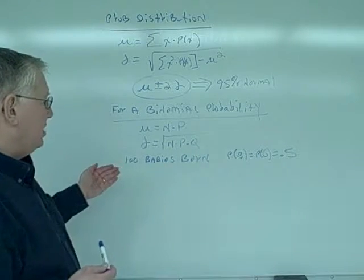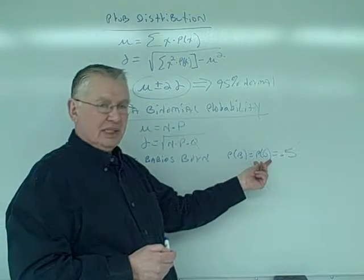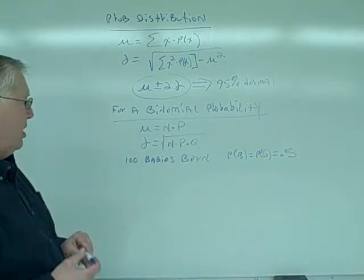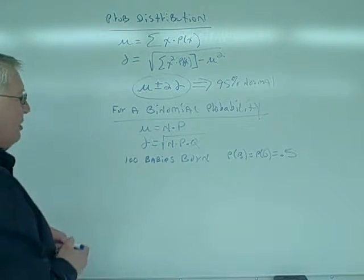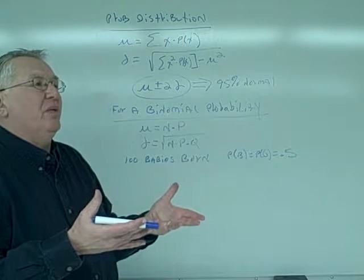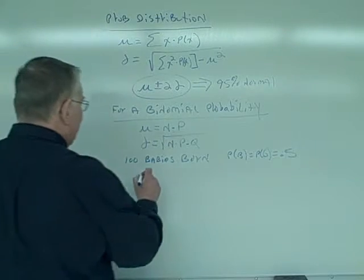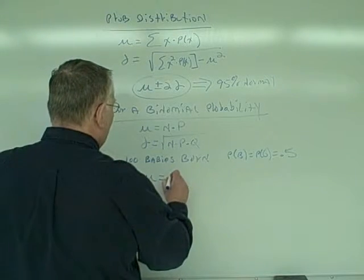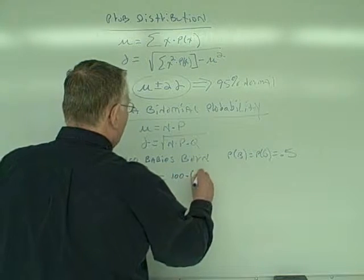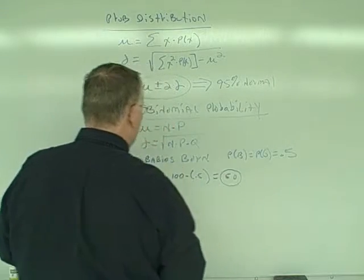So we're going to look at the situation where we have 100 babies born. The probability of a boy is the same as the probability of a girl is 0.5. We want to find how many boys would be normal out of 100. So the mean is going to be n times p. n is 100 babies, the probability of a boy is 0.5, I get 50. The mean would be 50 boys.